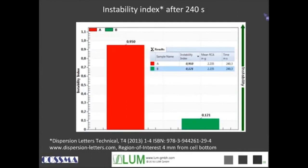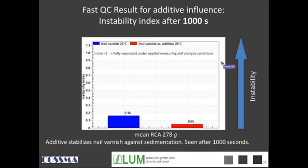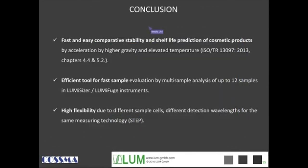For sample comparison, we use the instability index. If you would like to understand the mathematics, please refer to Dispersion Letters at www.dispersion-letters.com. For QC, a measurement of only 1000 seconds is needed to distinguish both samples by the instability index. You then make a double sampling — measuring double samples of six — or if you are doing a fast screening to get a very first impression, you can measure 12 different samples.